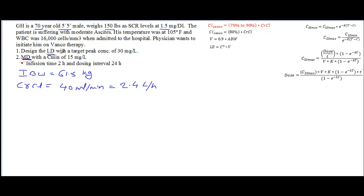The first step to calculate the loading dose is we need the volume of distribution. Volume of distribution is based on Matzky's equation. Since the patient is suffering from moderate ascites, we are going for the higher end of the volume of distribution range. Matzky's range is 0.4 to 1.0 liter per kilogram. Since our patient has moderate ascites, we use 0.9 times the actual body weight.